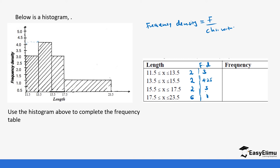To get the frequency, frequency density equals frequency over class width, so frequency equals class width times frequency density. For the first class: 2 times 3 gives us 6. Then 2 times 4.25 gives us 8.5. Then 2 times 3 gives us 6. And 6 times 1 gives us 6.